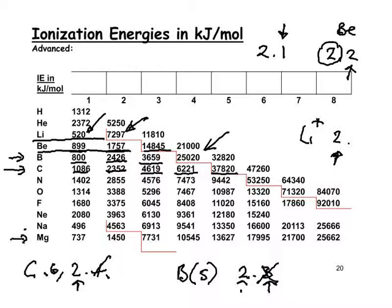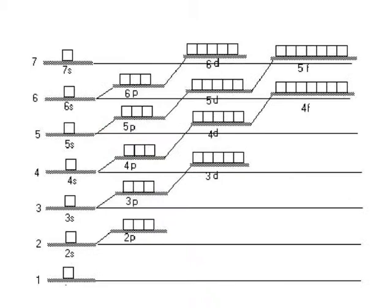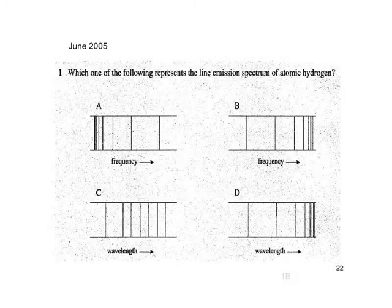One last example: magnesium, atomic number 12, configuration 2.8.2. Removing the second electron takes around 1,000–1,200 kJ/mol, but to remove the third — which is coming from energy level 2 — takes very much more energy. This confirms the pattern: the big jump in successive ionization energies tells us which group the element is in.